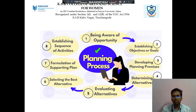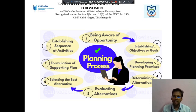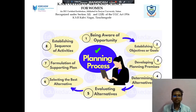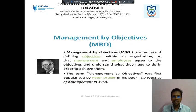Next we discuss about the planning process. The first step is being aware of opportunity, then establish the goal, then developing planning premises, then determine alternatives, then evaluate the alternatives, then select the best alternative, then formulating supporting plans, then establishing sequence of activities. These are the eight points in the planning process.